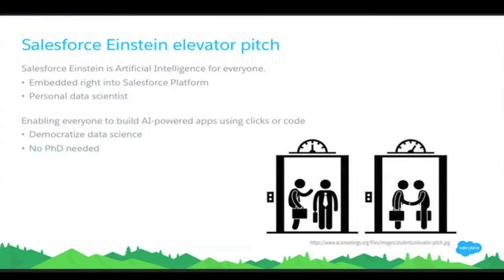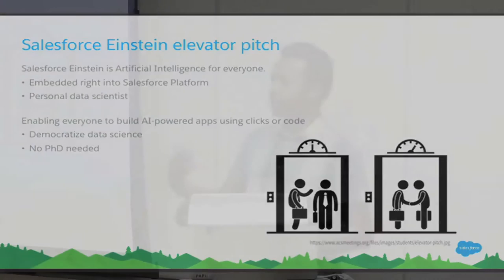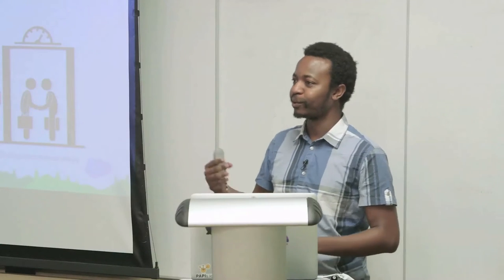The elevator pitch for Salesforce Einstein has two main points. First, Salesforce Einstein is artificial intelligence for everyone — data science embedded into the Salesforce platform and your personal data scientist. Second, enabling everybody to build AI-powered apps using clicks or code. We want to democratize data science — you shouldn't need a PhD in machine learning to build products with the benefit of data science.